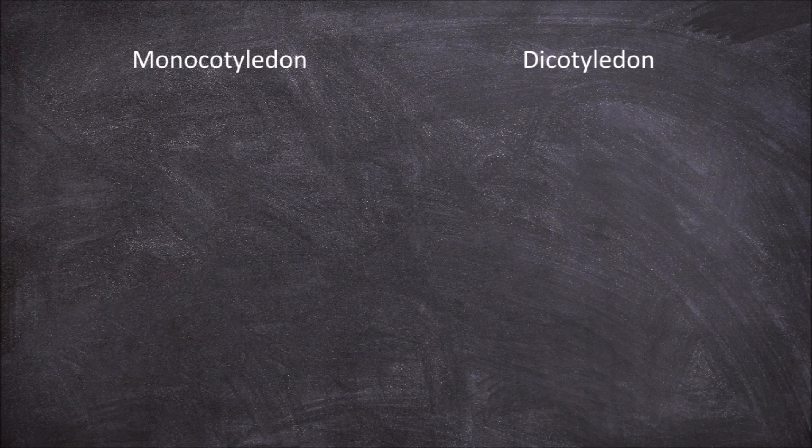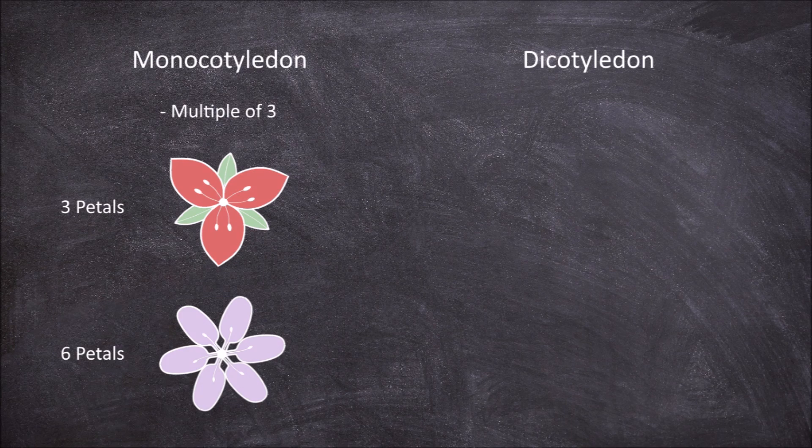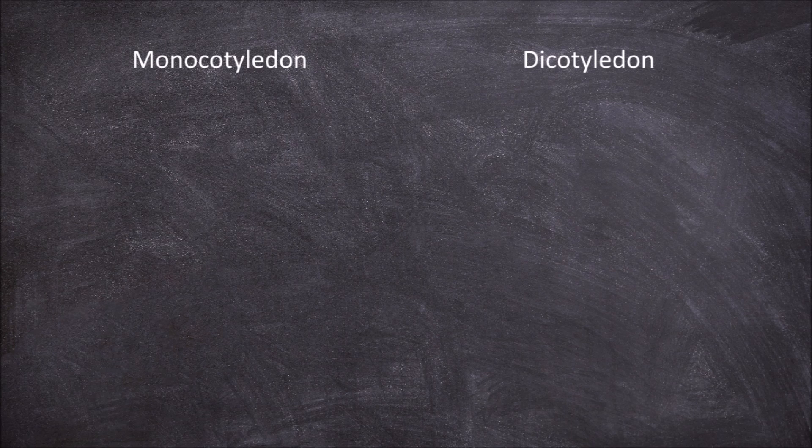In dicots, the roots consist of a taproot system. The third feature is seen in the flowering organs of each group. In monocots, the floral organs are found in multiples of three. In dicots, the petals and other flower organs are found in multiples of four or five.